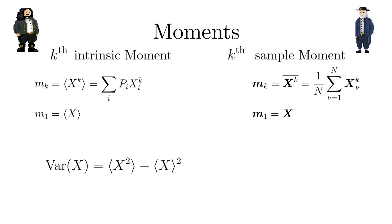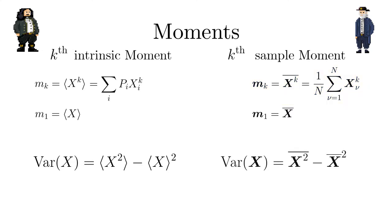Similarly it is straightforward to compute the kth moment based on a sample. By the same proof we also obtain the useful relation that the sample variance is given by the second sample moment minus the first moment squared.